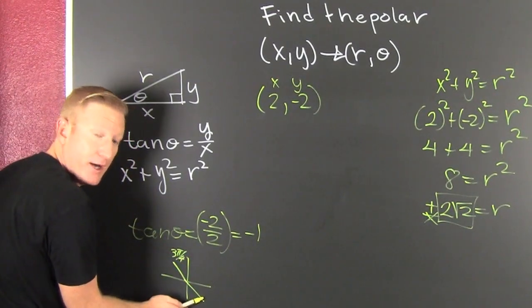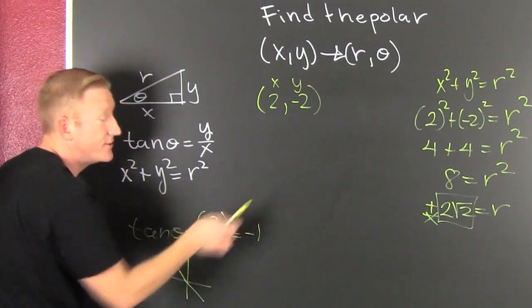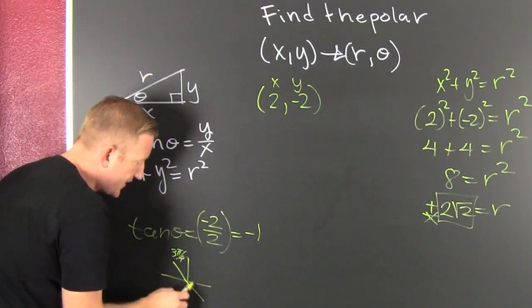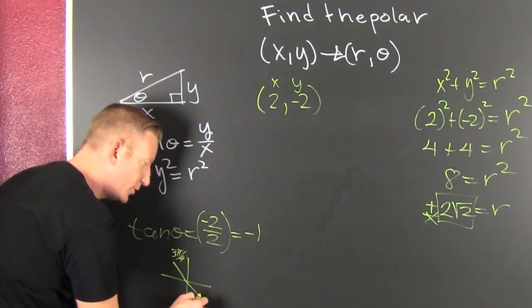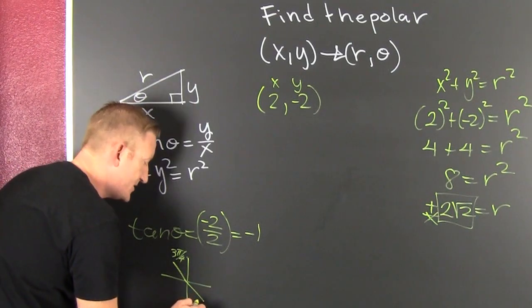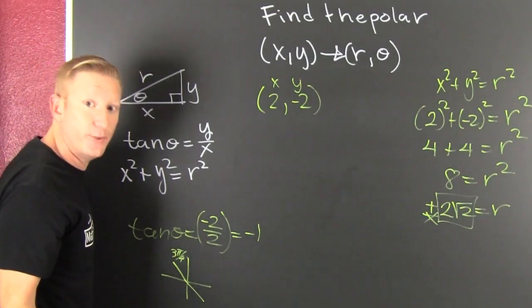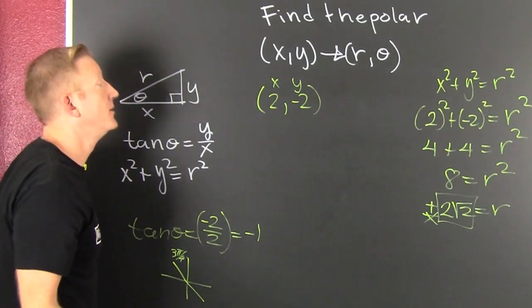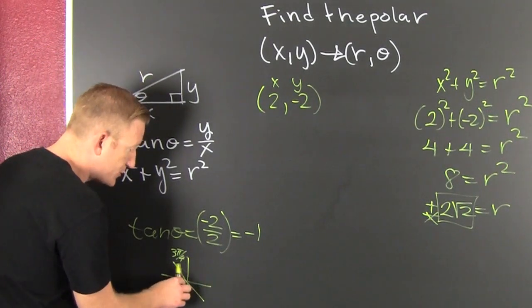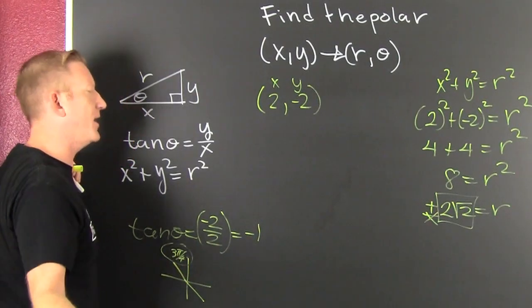Could I have also done minus pi over 4? Sure, but I would have used that negative R. Could I have also done 7 pi's over 4? Sure. As we saw in the last video, polar coordinates are not unique. I'm just taking the first positive one: 3 pi's over 4.